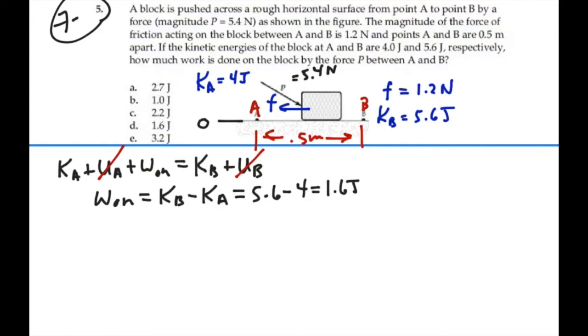But there's actually two works going on here. We have the work done by the force P, and we have the work done by friction. So, let's add those together, and that should equal this 1.6 joules. Well, we can't figure out what the work done by P is, per se, but we can figure out what the work done by friction is.